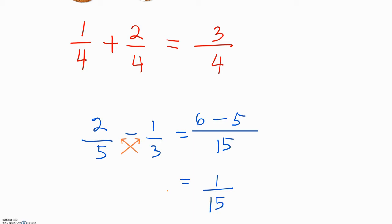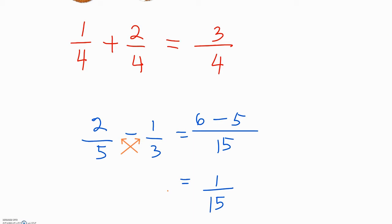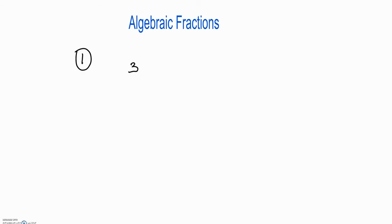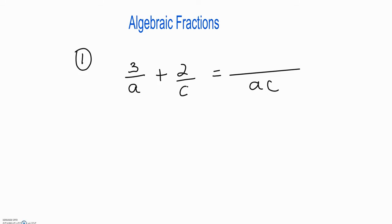So that is for our numeric fractions. Now let us go back to the algebraic fractions — this time it's going to involve letters, being algebra. For our first example, you have 3 over a minus 2 over c. As with the numeric fractions, we're going to multiply both denominators: a times c will give you ac. Then cross multiply: three times c gives you 3c.